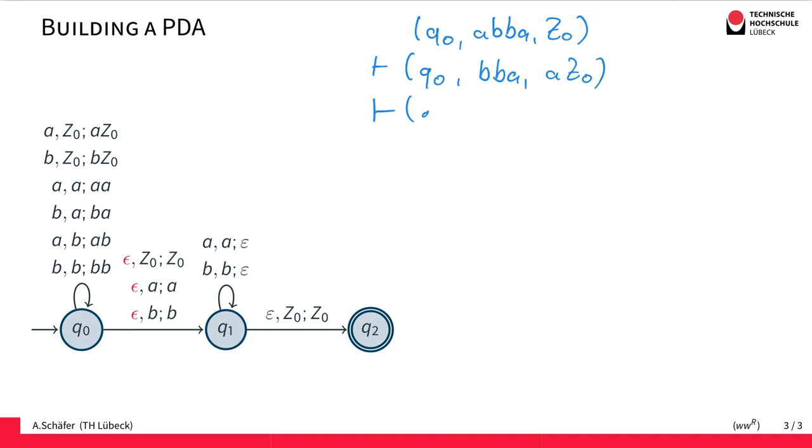Then we change state and move to Q1. Have B, B, A remaining and A, Z0 on the stack.